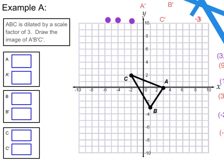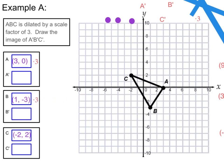So let's take a look at our graph. We see that A is at positive 3, 0. B is at 1, negative 3. And C is at negative 2, 2. Now we're going to multiply each of the points by the scale factor — times 3 for A, times 3 for B, and times 3 for C.